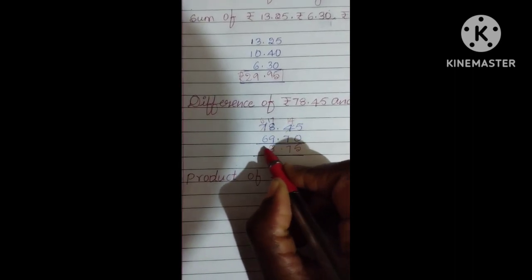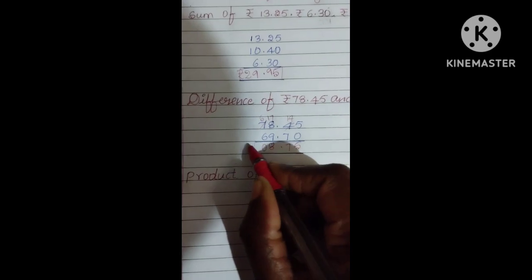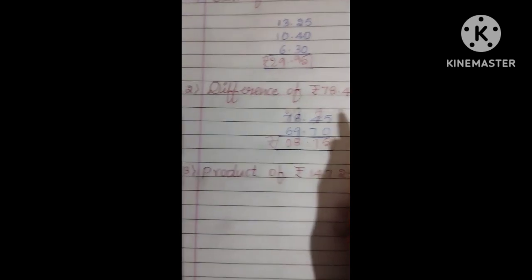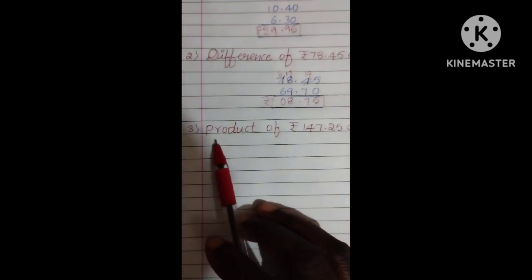6 minus 6, 0. So answer is Rupees 8, 75 paise. Clear? Next we have third question, product.